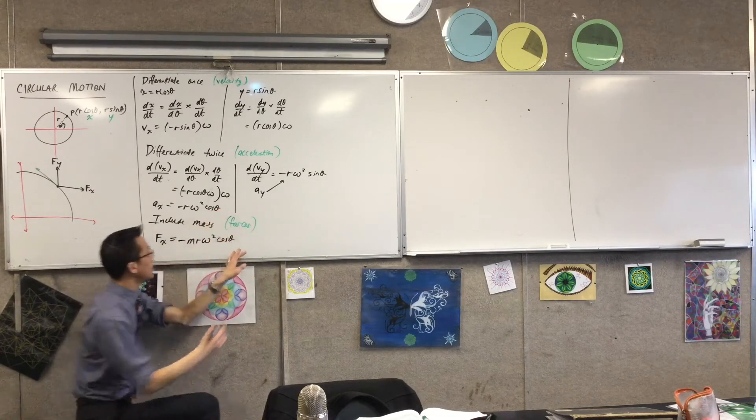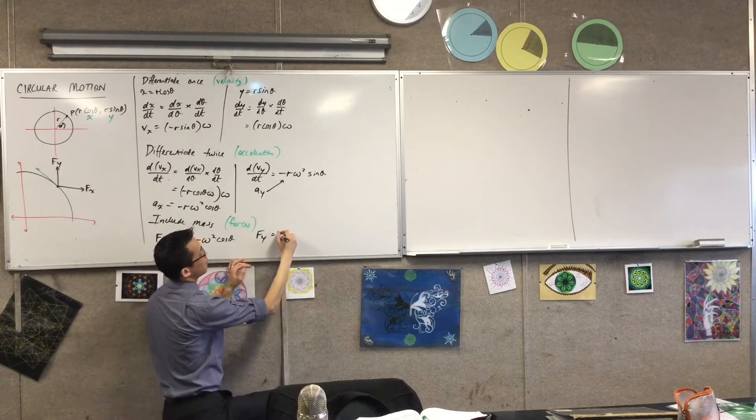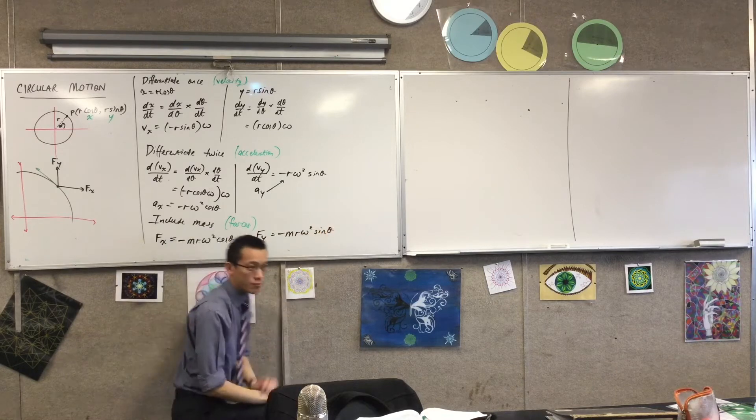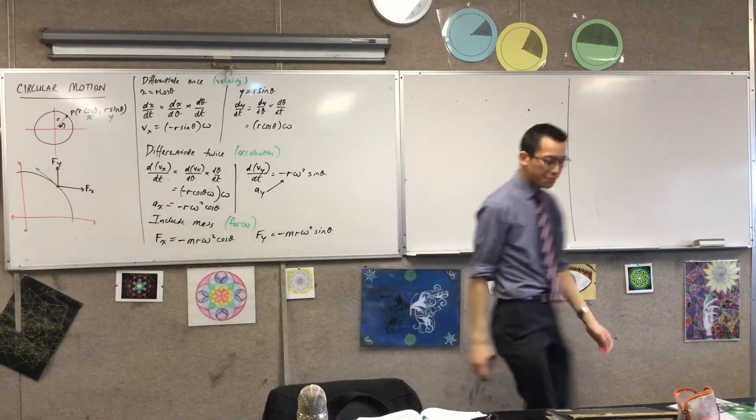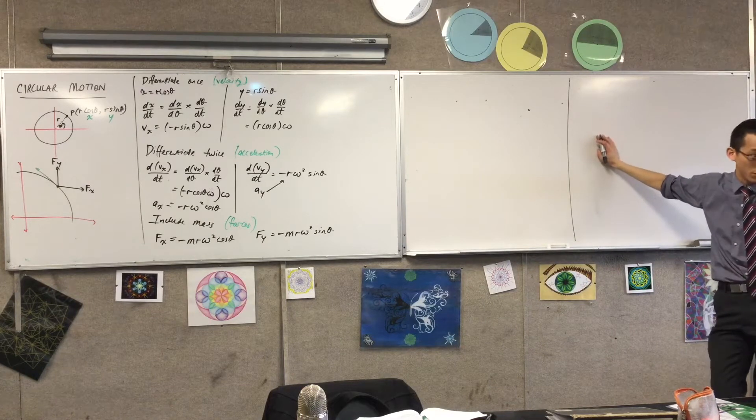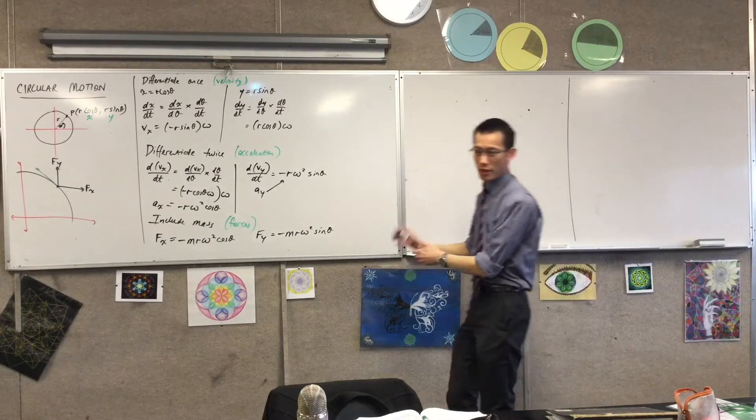And the same guy over here, if I'm thinking about the forces acting vertically, I'm going to have minus m r omega squared. Okay, so I've got my values there, so far so good. Okay, now again, I'm going to keep on asking questions. What's interesting that I can do with these?